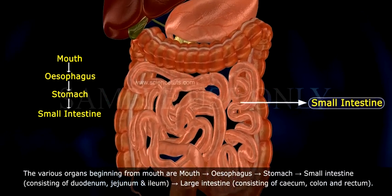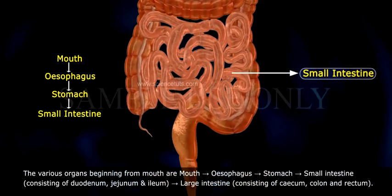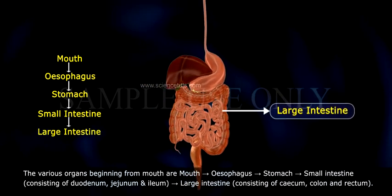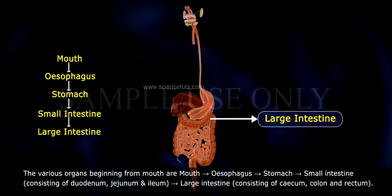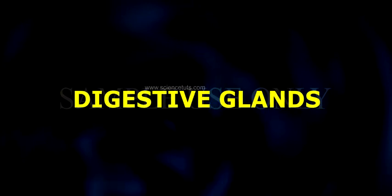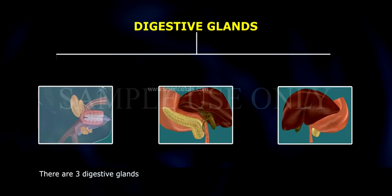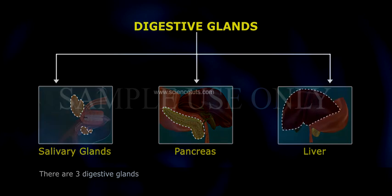The small intestine consists of the duodenum, jejunum, and ileum. The large intestine consists of the cecum, colon, and rectum. There are three digestive glands: 1. Salivary glands, 2. Pancreas, and 3. Liver.